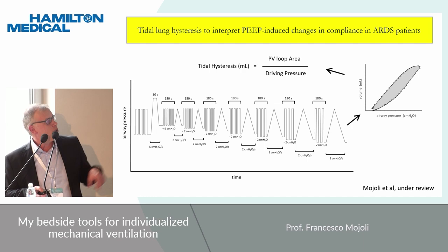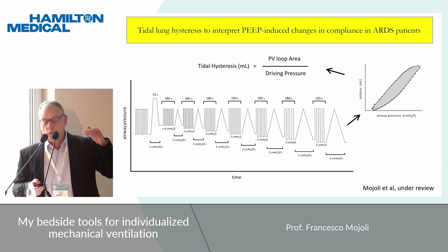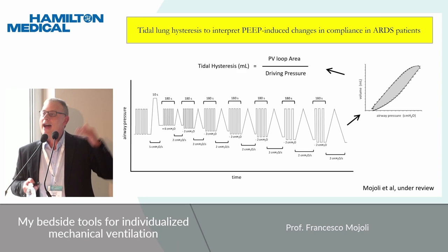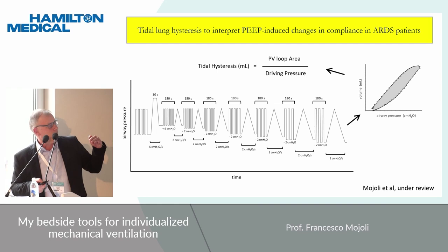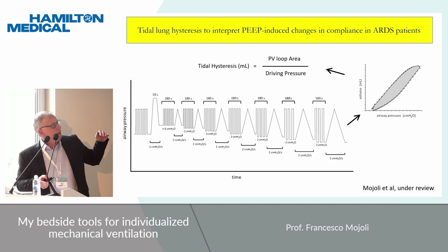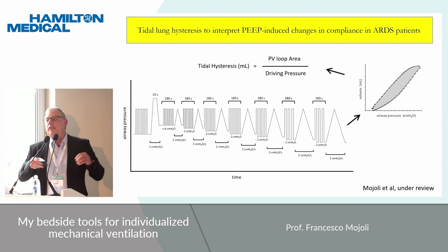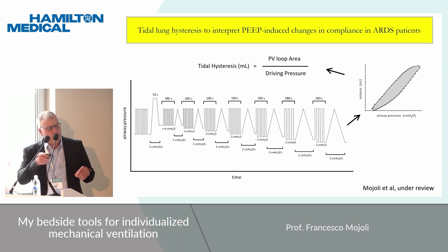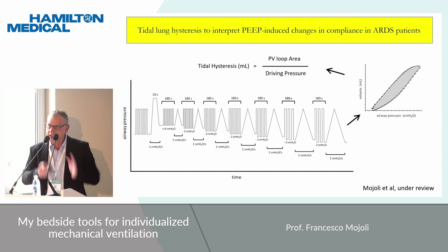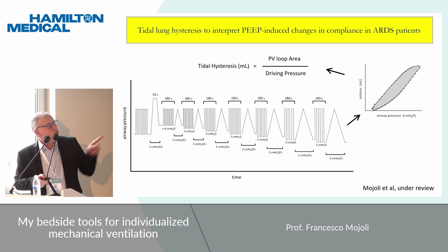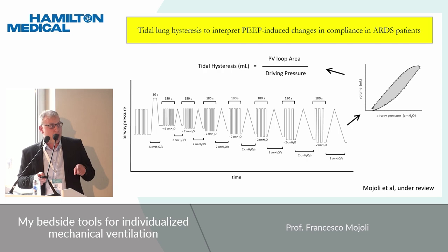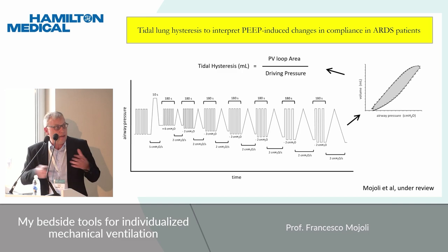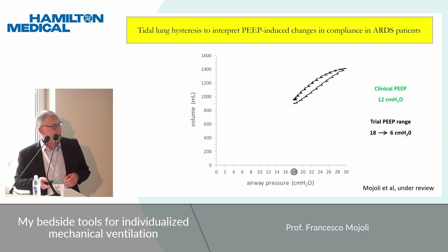So after a brief recruitment maneuver, we performed a decremental PIP trial, starting with a high PIP that was 6 cm of water higher than the clinical baseline PIP, while maintaining constant the plateau pressure. Then PIP was decreased by 2 cm of water steps, down to a minimum value of clinical PIP minus 6 cm of water. At the end of each step, we performed the low flow inflation deflation maneuver — not the full curve, but the tidal maneuver from PIP to plateau and back — and measured tidal hysteresis as the area enclosed in the pressure volume loop, normalized on the driving pressure.